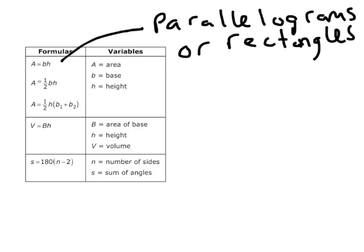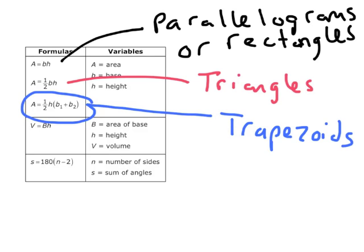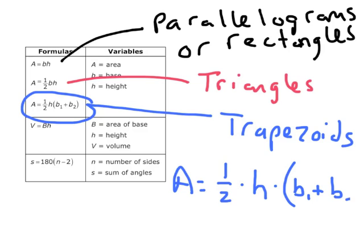Area equals one-half base times height — this is for triangles. And then this third formula, which might be new to you, is the rule for trapezoids. It says the area is equal to one-half times the height of the trapezoid, times the sum of the first base and the second base. I'll show you what those two bases are.